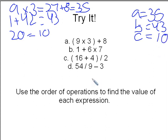D is 54 divided by 9 minus 3. 54 divided by 9 is 6, minus 3. D equals 3.